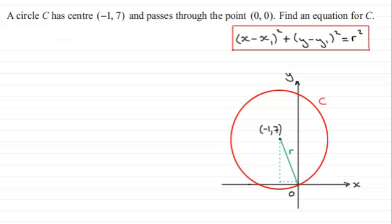So using Pythagoras's theorem, we can get that r² equals the difference in the x coordinates all squared - so that's (-1 - 0) or just simply (-1)² - plus the difference in the y coordinates, 7 - 0 or just simply (7)².